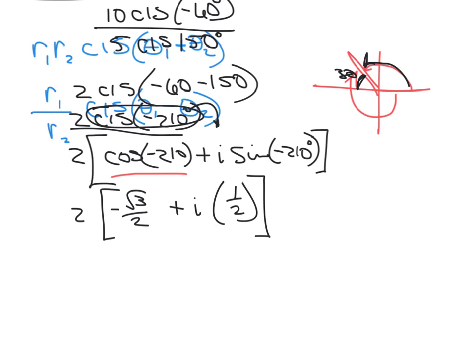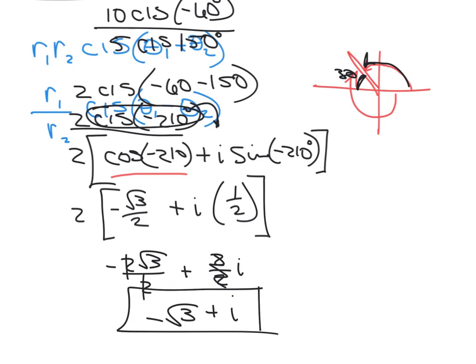Continuing along, we distribute: negative 2 square root of 3 over 2, plus 2 over 2 i. These cancel, so we have negative square root of 3 plus i for an answer. That's it. We're in rectangular form. We changed it into rectangular form without really even doing anything.